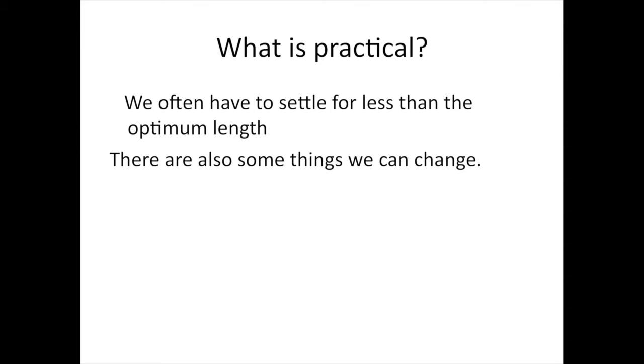So now what is practical? We often have to settle for less than the optimum length, and there are also some things that we can change. If we back off a little bit from a zero degree elevation angle, which really isn't practical anyway, and we drop the wire to the ground where we can decrease the velocity factor, even though we are not going to receive quite as strong a signal as we might have with the wire up in the air, we are still going to get enough signal on 160 meters to hear the DX stations. And we are not really going to lose that much, as I will show you here in a minute.